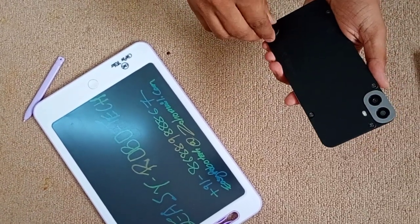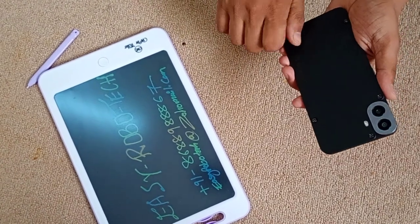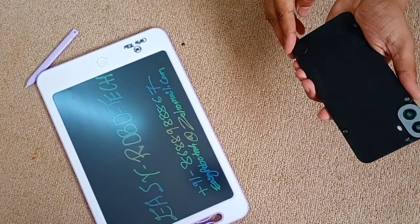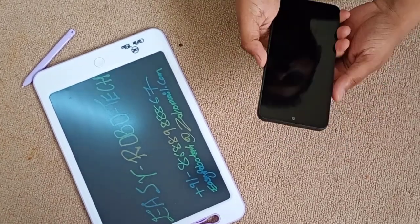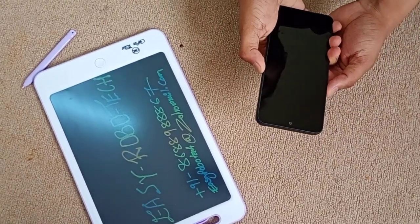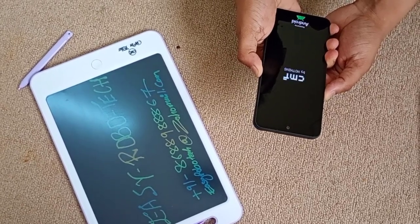The Phone1CMF features a transparent back, which is a signature design choice for Nothing. This design is not just for aesthetics, it also allows you to change the back covers with simple steps which we will see in the upcoming videos and gives the phone a unique, high-tech look.